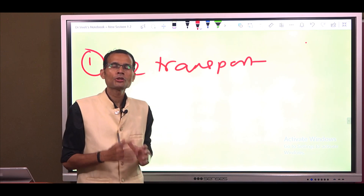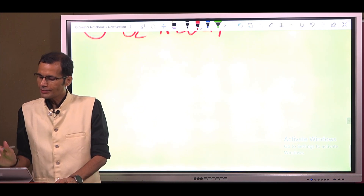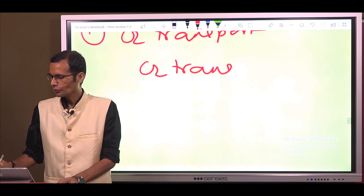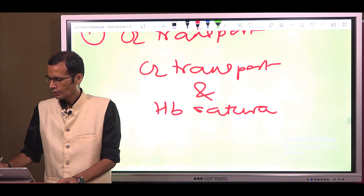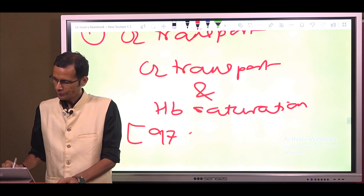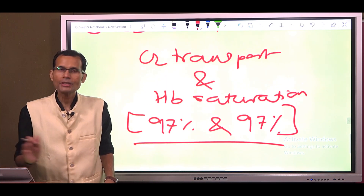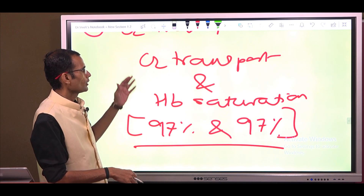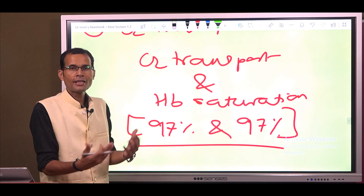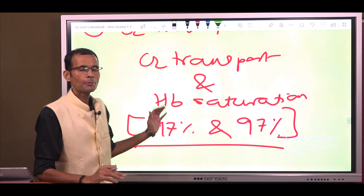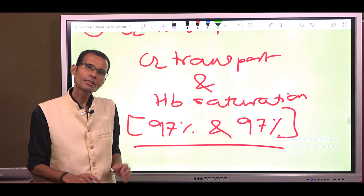Hello friends, welcome to a new video on a new topic and concept. This concept is related to oxygen transport and hemoglobin saturation. The title of the video is '97% and 97%'. Very often in textbooks, in the context of oxygen transport and hemoglobin saturation, the figures used are the same — 97% and 97%. So what are these two 97s? Let us try to figure this out.